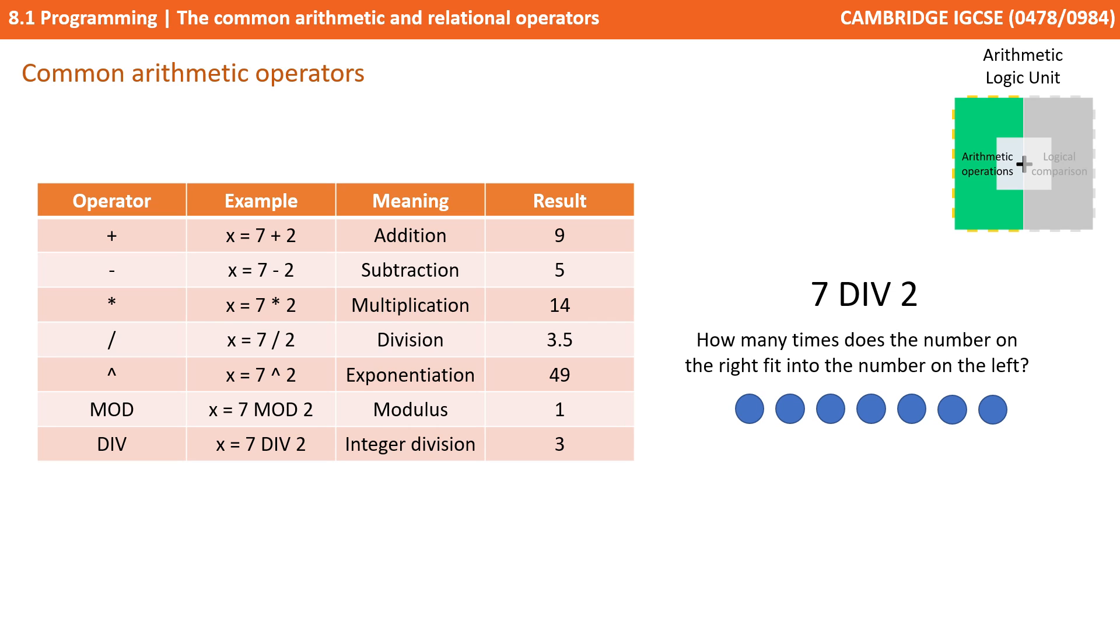To go along with this mod command, we have div, and this is integer division. So 7 div 2, this is how many times does the number on the right fit into the number on the left? How many whole times? Well, as we saw from our previous example, 2 fits into 7 three whole times. So in this case, 7 div 2 equals 3.